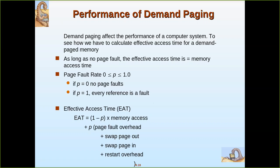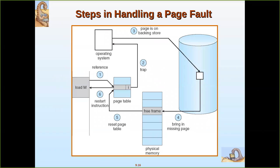By verifying the page table, the operating system finds that the particular page is not present. When a reference is made and the page is not present, this is determined by checking the valid and invalid bit. When the bit is invalid, a trap to the operating system is triggered, indicating the page is not present. An interrupt takes place, which we call a page fault, and a request to read from IO is initiated.